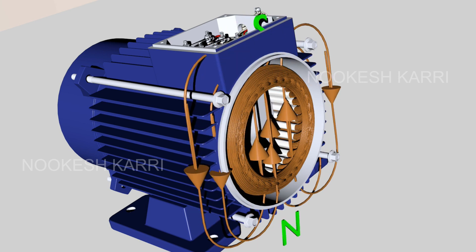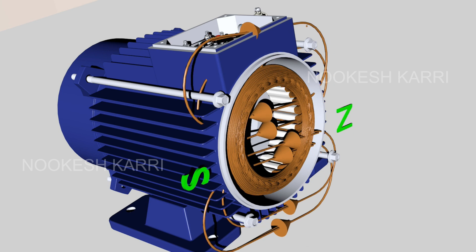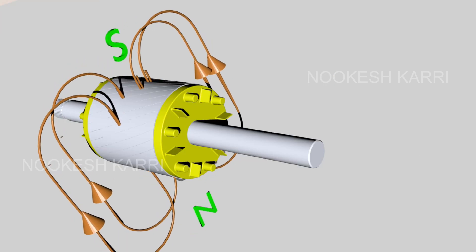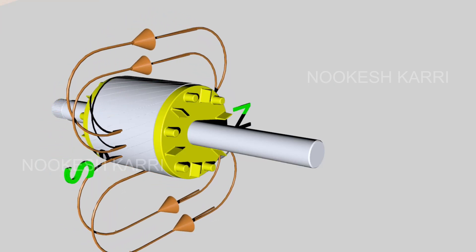According to Faraday's law, an EMF is induced in the rotor winding. The rotor is a closed circuit. Hence, due to this EMF, current will flow through the rotor circuit.